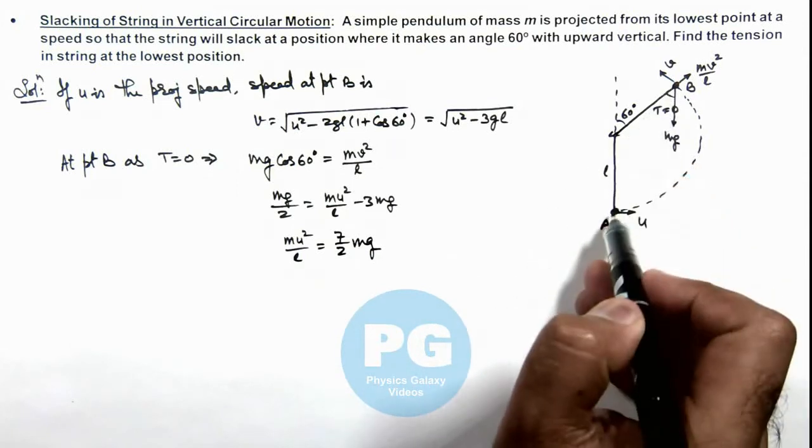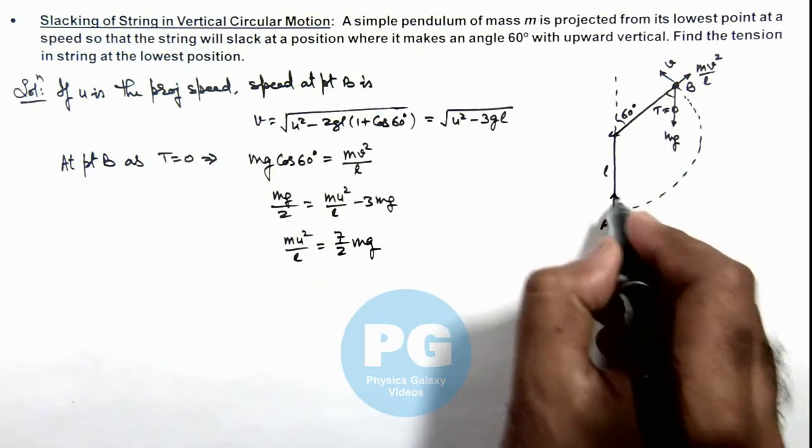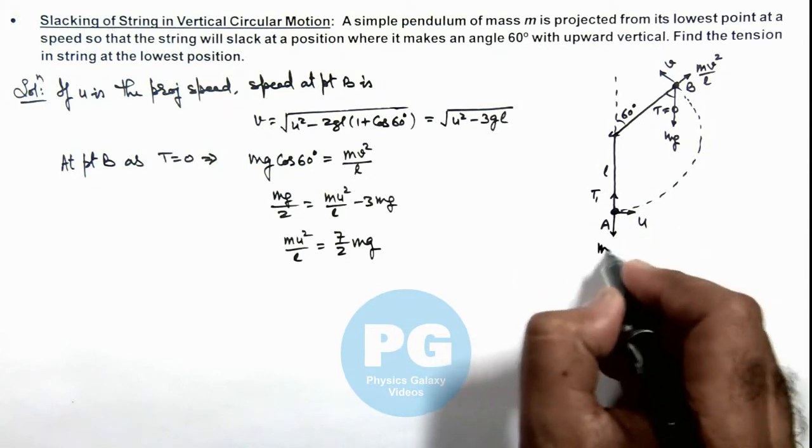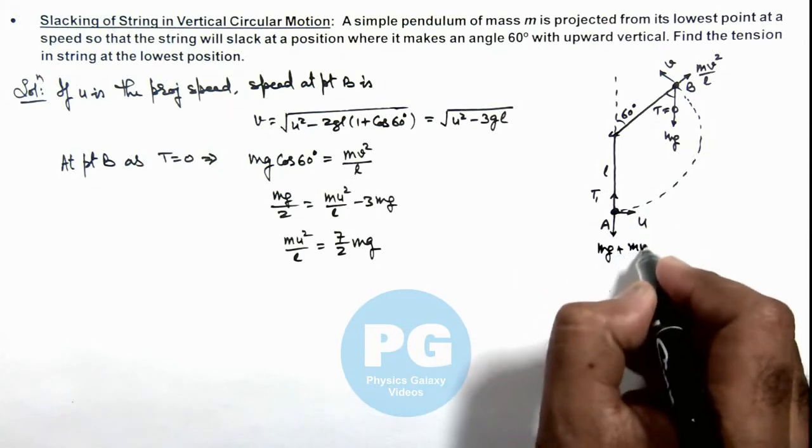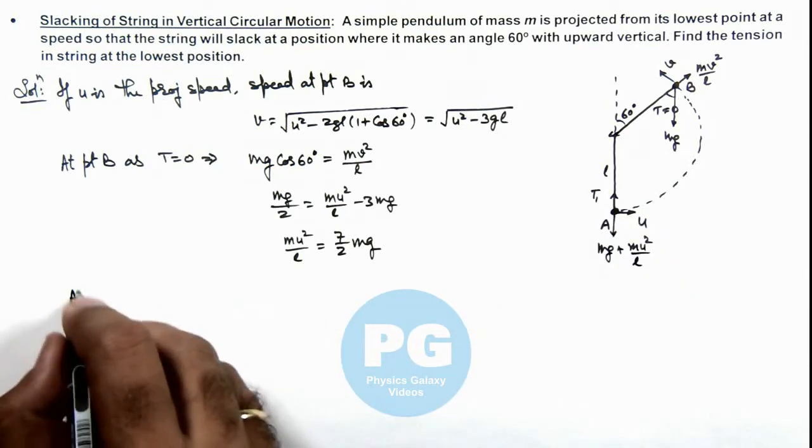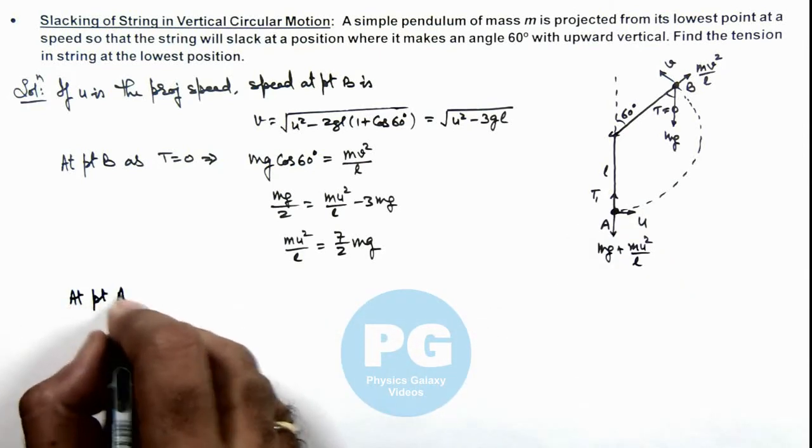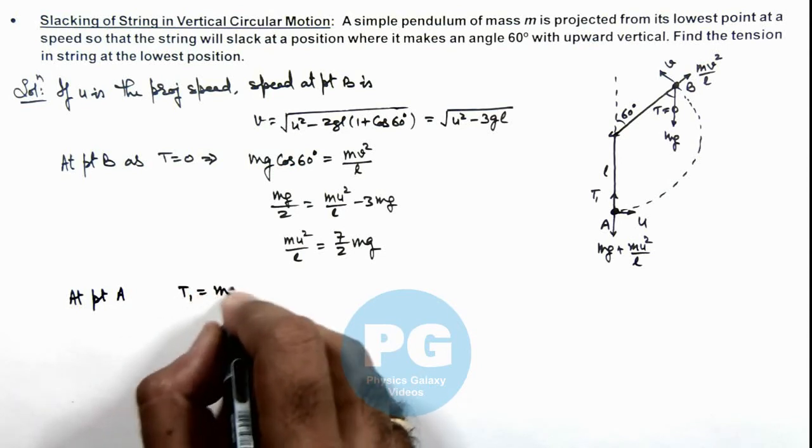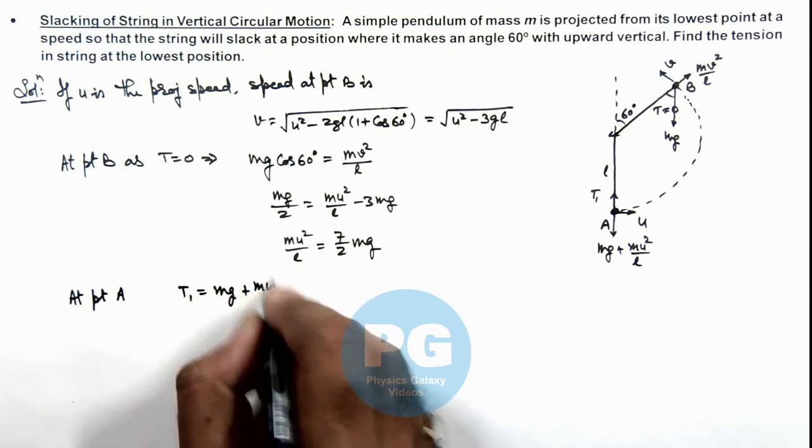And at this point, at the bottommost point, if we wish to find out the tension in string, if it is T₁, here it is experiencing mg plus centrifugal force in downward direction. So we can write at point A, T₁ is equal to mg plus mu² by l.